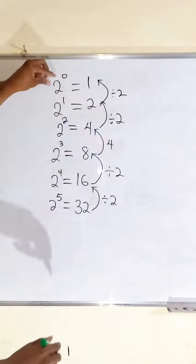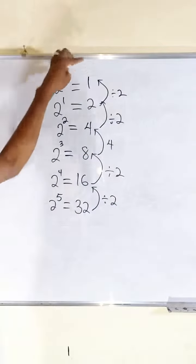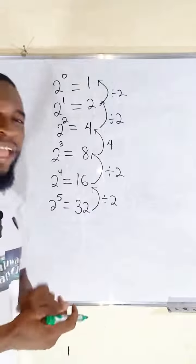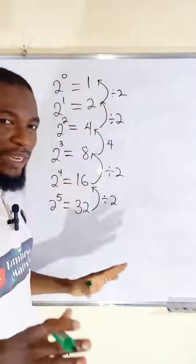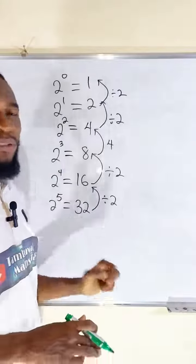So 2 to the power of 0 is 1. Hence, we have proven that any number to the power of 0 equals 1, provided that number is not equal to 0.